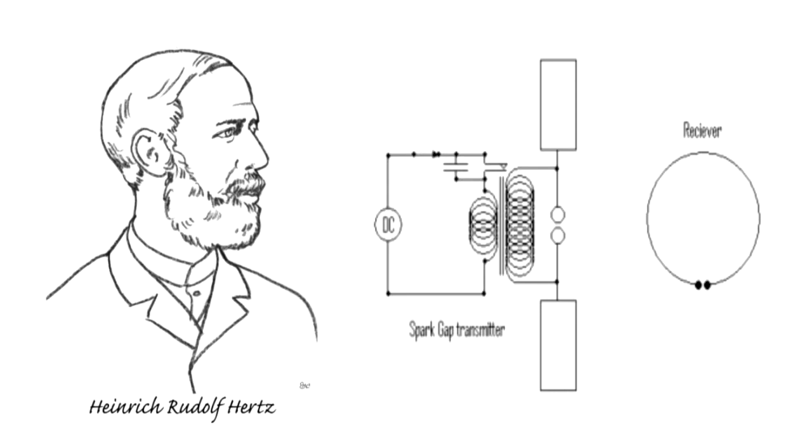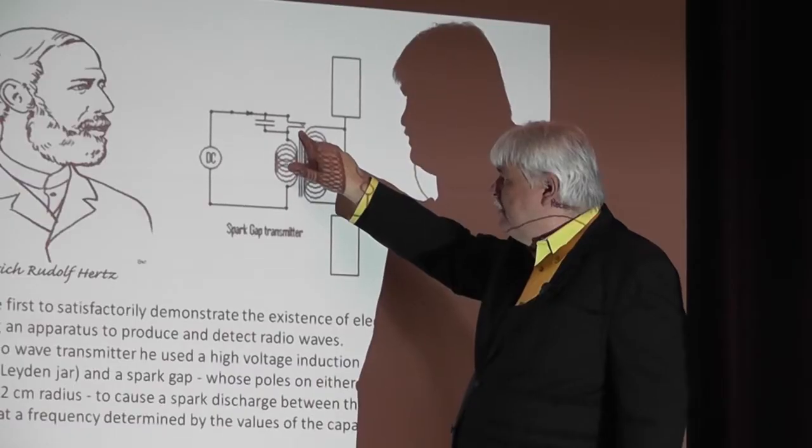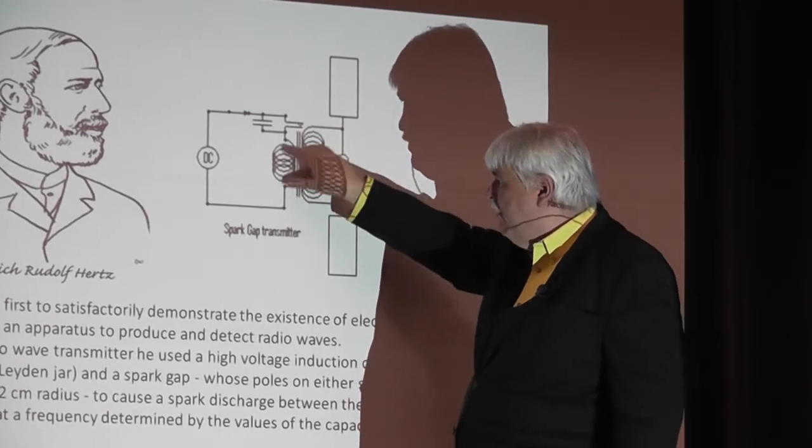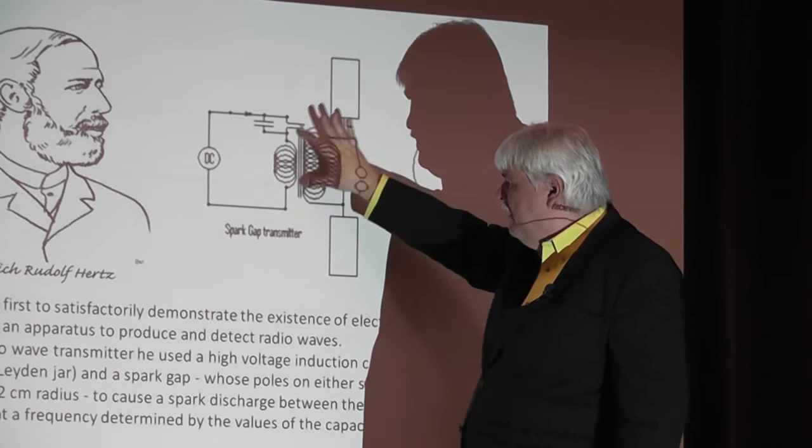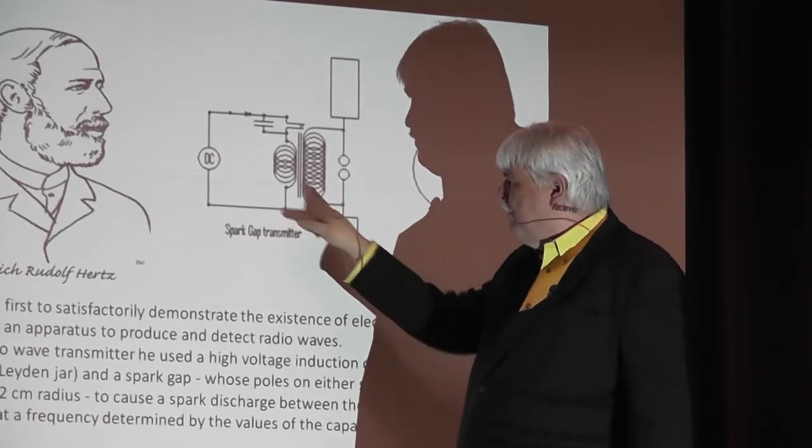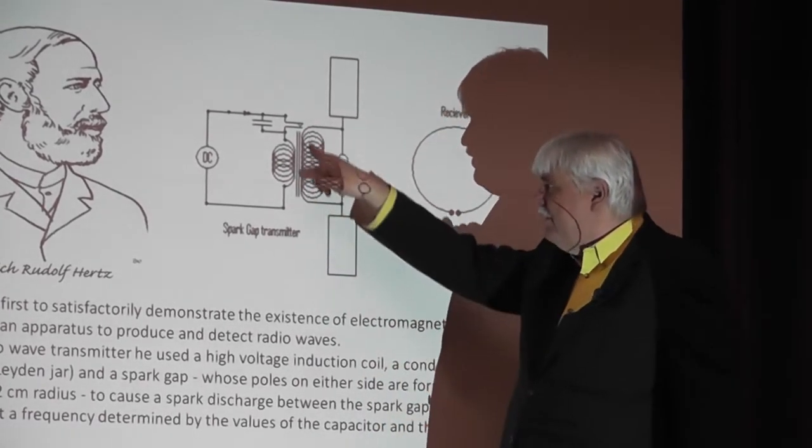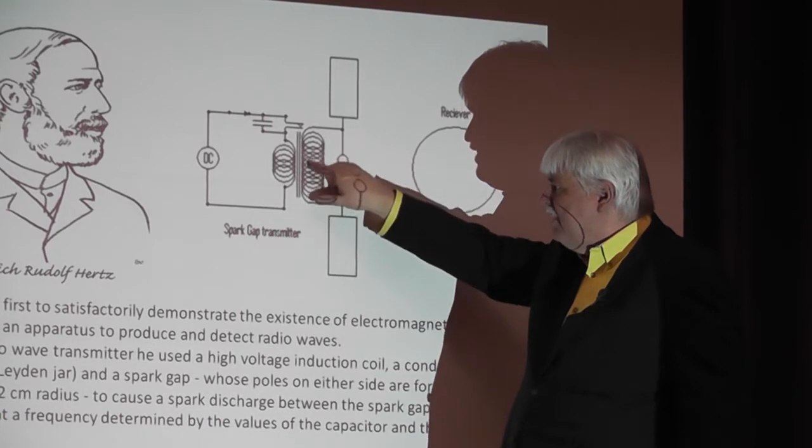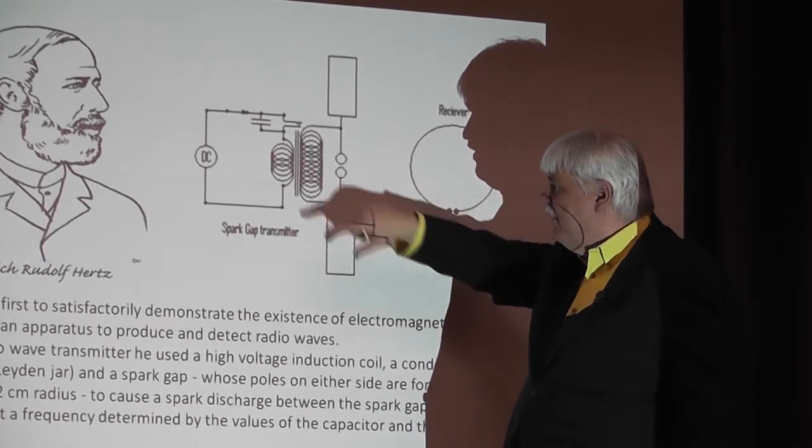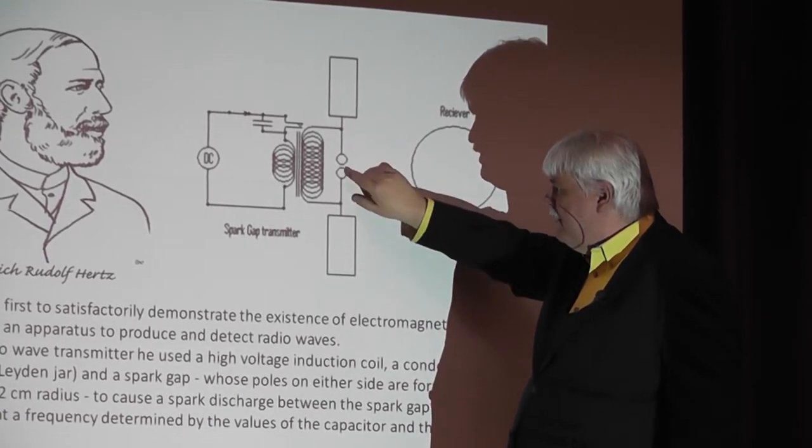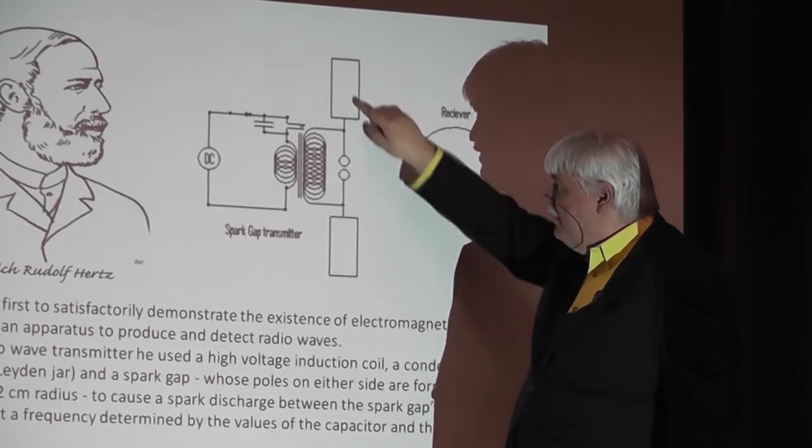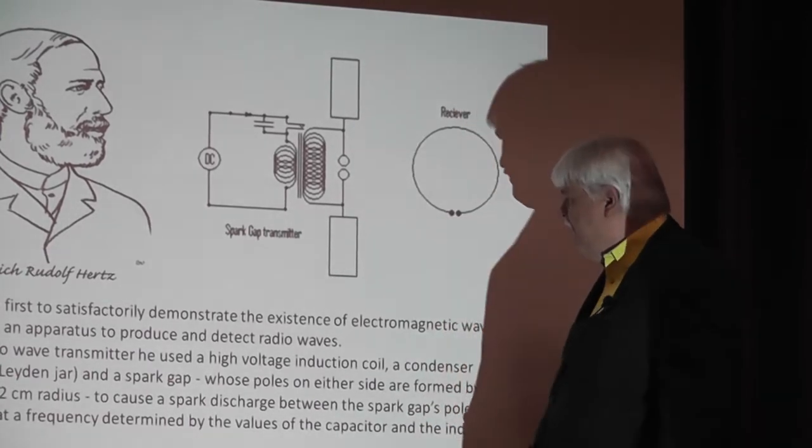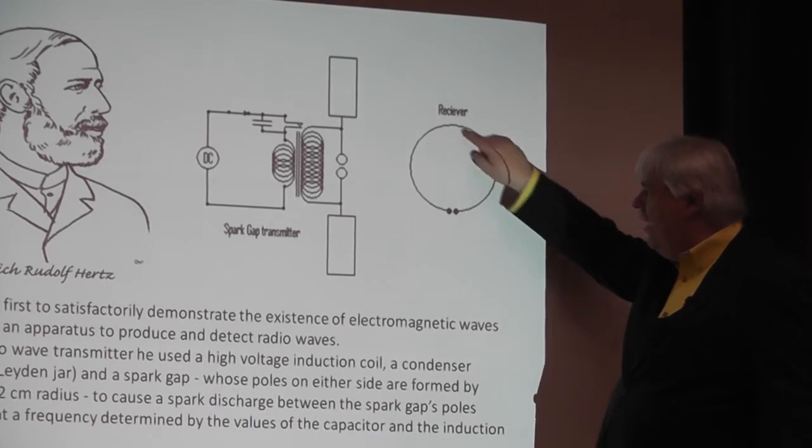It has DC supplying a feed to this key right here, like a key for a telegraph. When that keys this coil, it's making an induced current which is then transferred - this is a transformer primary to secondary. This increases the voltage - this is a step-up transformer. That's making a higher voltage over here. When that voltage comes across the spark gap here, it goes to these two antennas. What he found was if you take this ring of wire or metal,